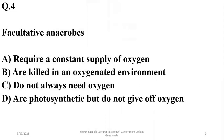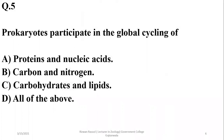Facultative anaerobes may survive with or without oxygen and they do not always need an oxygen supply, so the right option is Charlie. Question five: prokaryotes participate in the global cycling of almost all types of nutrients; they are recycled by bacteria, so the right option is delta.